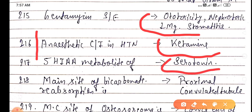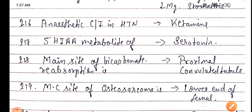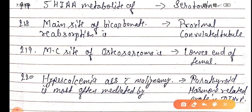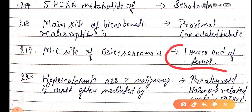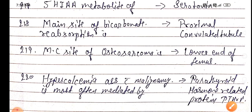The main site of bicarbonate reabsorption is the PCT, proximal convoluted tubule. The most common site for osteosarcoma is the lower end of the femur. Hypercalcemia associated with malignancy is most often mediated by parathyroid hormone-related proteins (PTHrP).